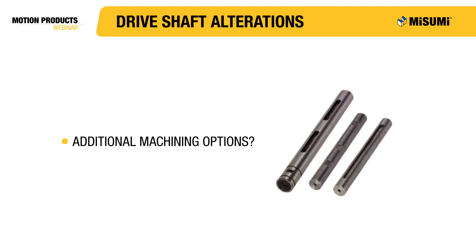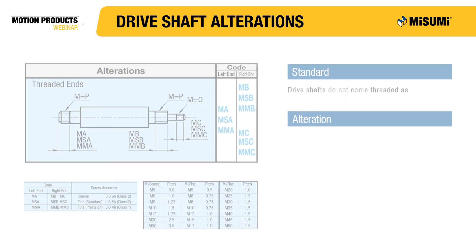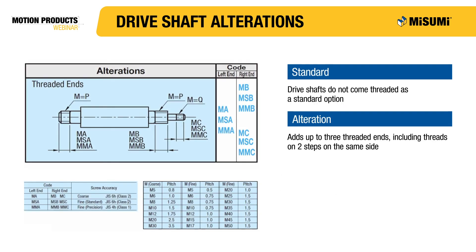Just like rotary shafts, drive shafts sometimes require additional alterations. One advantage of drive shafts is that more complex machining options are available. The first alteration for drive shafts adds up to three threaded shaft ends, including two step threads on one end of the shaft. You can select either a coarse or fine thread pitch, as noted in the chart. The tapped end alteration adds a tap to one or both ends of the drive shaft, with the thread always being coarse for this option.